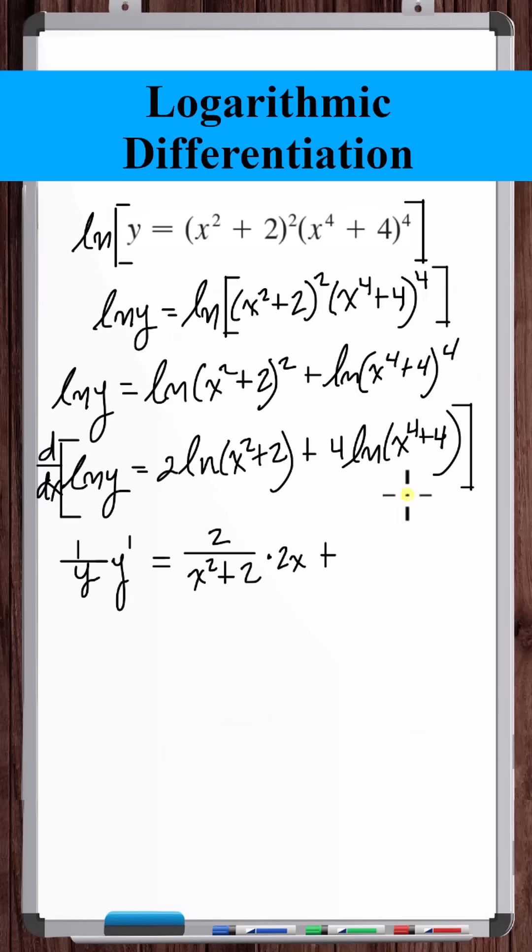The derivative of the natural log of x to the 4th plus 4 is 1 over x to the 4th plus 4. Bring the 4 into the numerator. Times the derivative of x to the 4th plus 4 is 4x cubed.